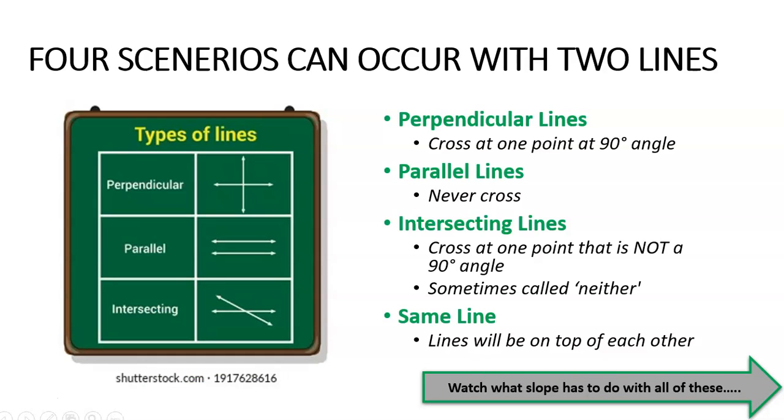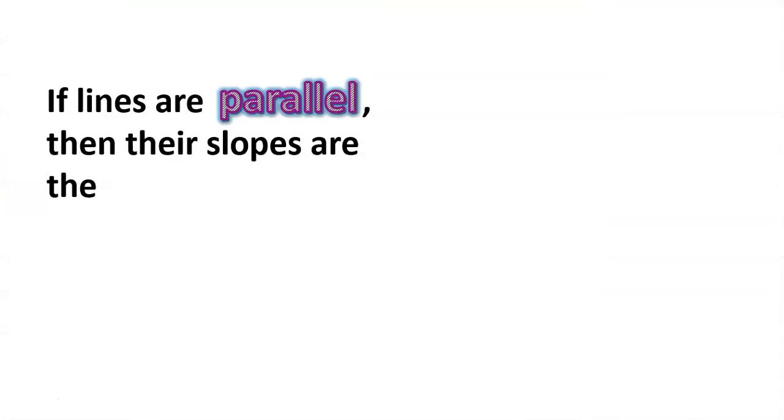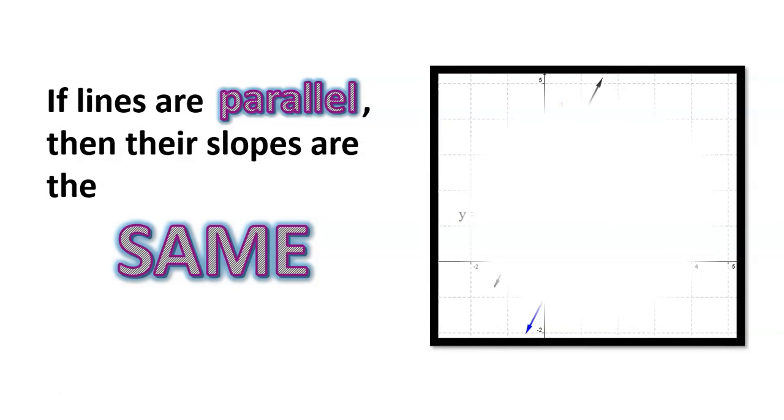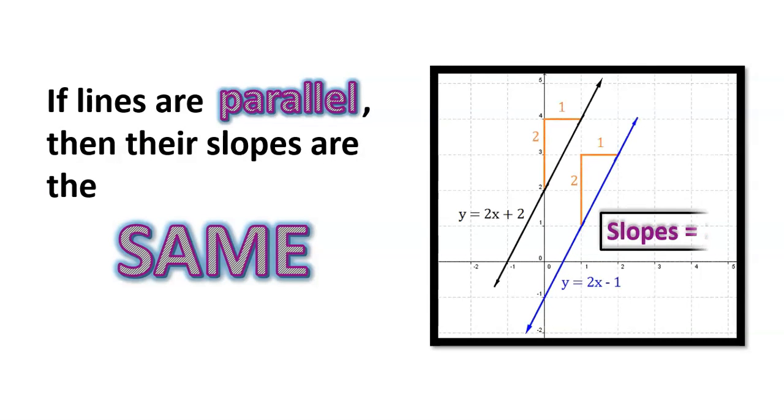Watch what slope has to do with all of these things. If lines are parallel, then their slopes are the same and you will notice in the two lines over to the right, both of the equations have a slope of 2. Therefore the lines are parallel.